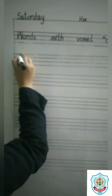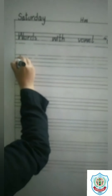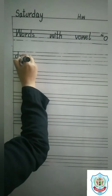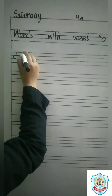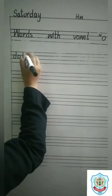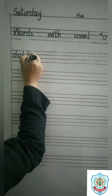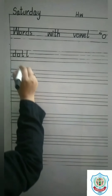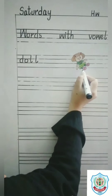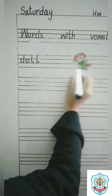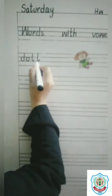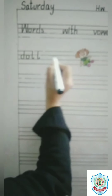Write the first word: Doll. D has a sound D, O has a sound O, and double L makes a sound L. D, O, double L. Doll.